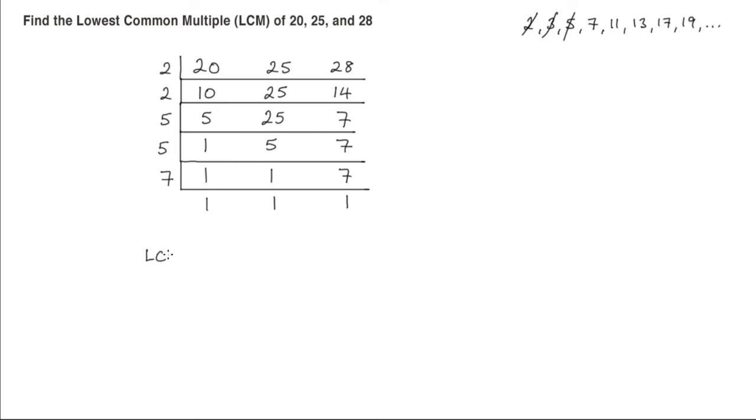Now the lowest common multiple is found by multiplying these prime numbers. So we've got 2 multiplied by 2, multiplied by 5, multiplied by 5, multiplied by 7. And when we do that, we get 700.